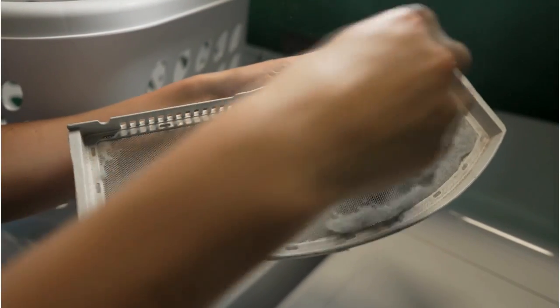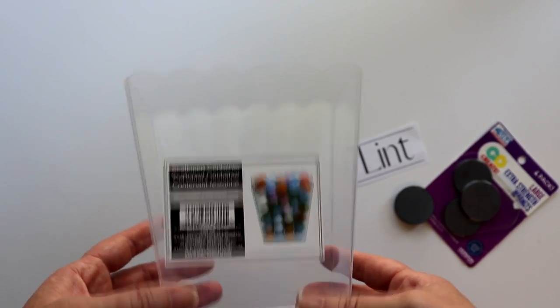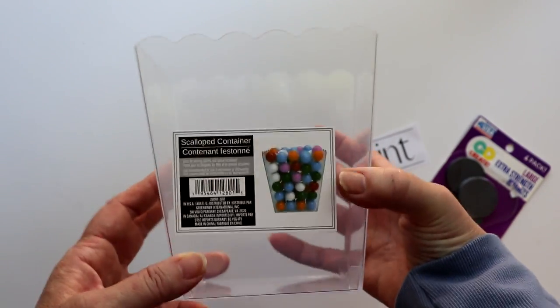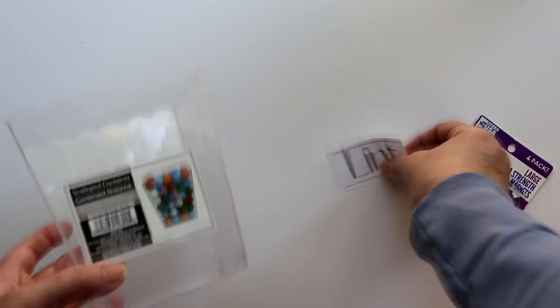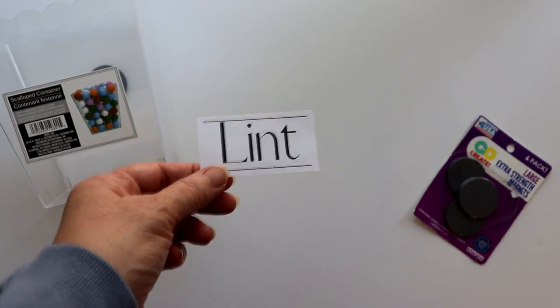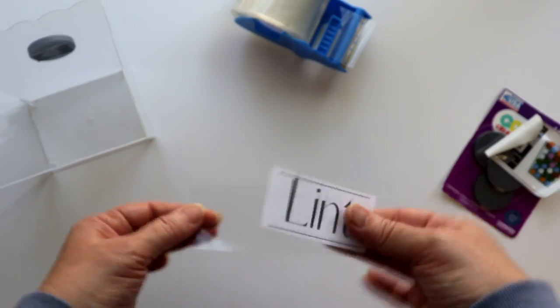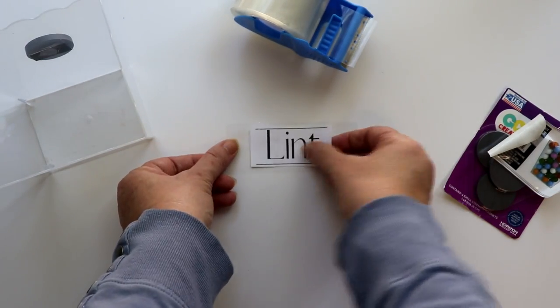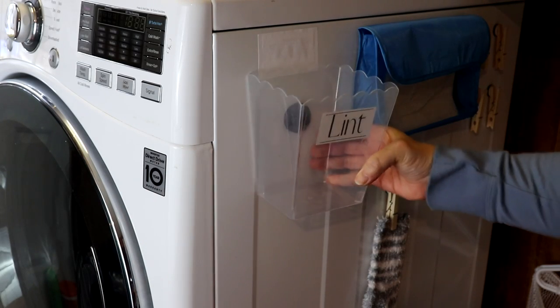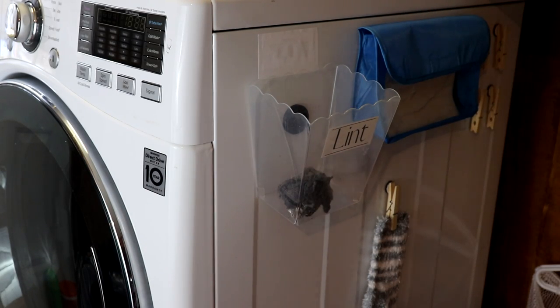But wherever it comes from, dryer lint is definitely a thing. And here is an idea for a handy magnetic lint receptacle. Take one of these Dollar Tree scallop containers from the party section and simply add a magnet to the back. I had these large round ones from Walmart on hand, so I used that. You can also add a label if you like. I just printed this one on my computer and then used packing tape to affix it to the inside of the container. And that's it. It's ready to hold all that lint, or for all we know, the tragic remains of our lost socks.